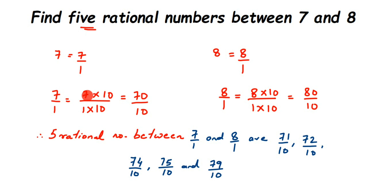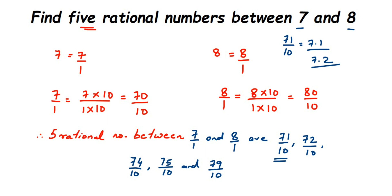Your answer may differ from your friend's or teacher's answer, but don't worry — it is still correct. To cross-check, convert to decimals: 70 by 10 equals 7.0 and 72 by 10 equals 7.2. You can see that 7.1, 7.2 lie between 7 and 8, confirming they are valid rational numbers between the two given values. I hope this question is clear. If you have any doubts, drop a comment. Thank you for watching.